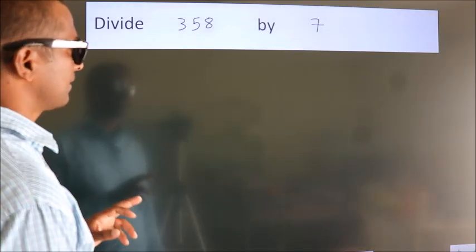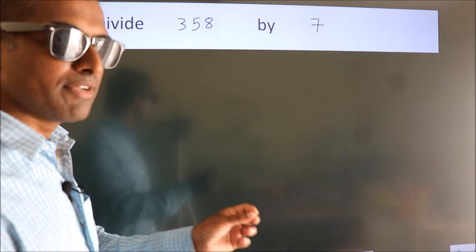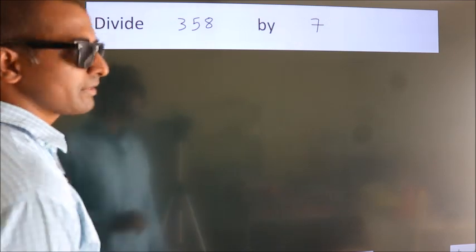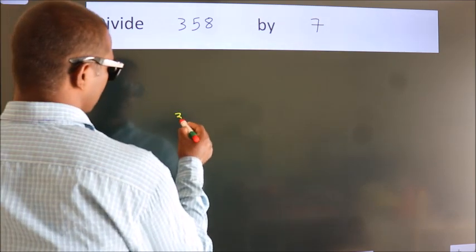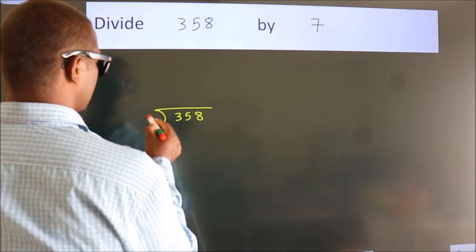Divide 358 by 7. To do this division, we should frame it in this way. 358 here, 7 here.